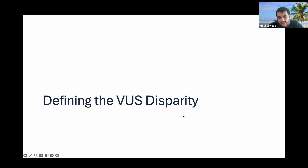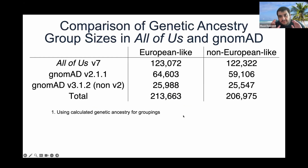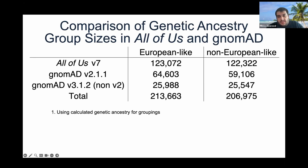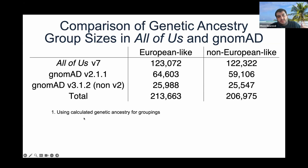We wanted to define this VUS disparity rather than rely on anecdotes. A lot of folks have focused on defining the VUS disparity in BRCA1, a small number of genes, or within a particular clinical lab, but we really wanted to show it at population scale. So we looked in multiple biobanks — All of Us version 7, gnomAD version 2, and gnomAD version 3 — chosen because they were population-level biobanks with a roughly equivalent number of individuals from European-like versus non-European-like backgrounds. This allows fair statistical comparisons without extra inference.